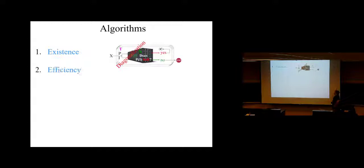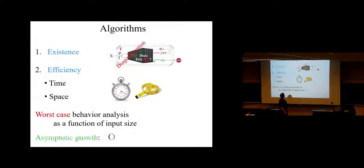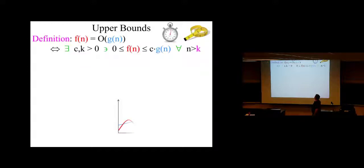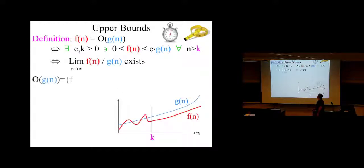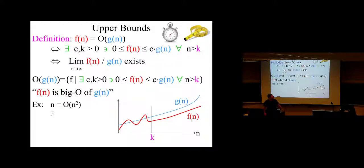So last time we talked about the efficiency of algorithms. The objective was minimizing space and time as we compute. We talked about asymptotic notation, big O, invented by Cantor, that asymptotically captures the growth of the space or time or whatever other resources we consume while we compute. That's an upper bound, big O.